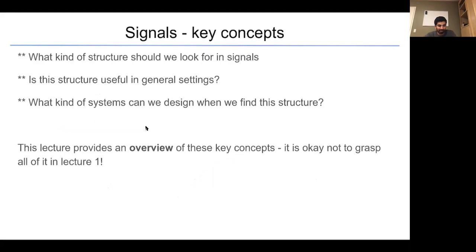The key concepts that we should learn is what structure we look for in signals. And we ask ourselves two questions to follow up. The first is, is the structure that we have identified in signals useful to us in general settings? And once we have found that structure, we ask what kind of systems do we design to exploit phenomena in the structure? This lecture will provide an overview of these key concepts. It is okay not to grasp all of it in lecture one.